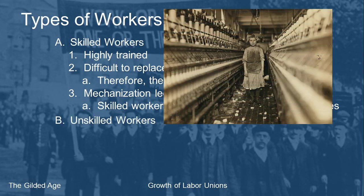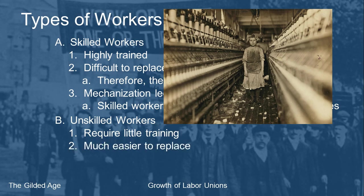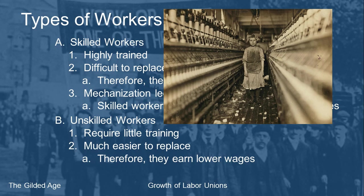With this machine, you no longer needed a skilled worker — just somebody who could use a measuring cup and turn a crank. Those people are called unskilled workers. Looking at a picture of an unskilled worker, she doesn't appear older than about twelve — children were counted as unskilled workers. Unskilled workers require very little training: they turn a crank, push a button, pull a lever. That makes them much easier to replace, so they end up earning lower wages because they can't demand more without being fired.